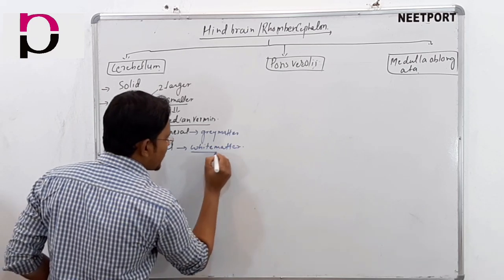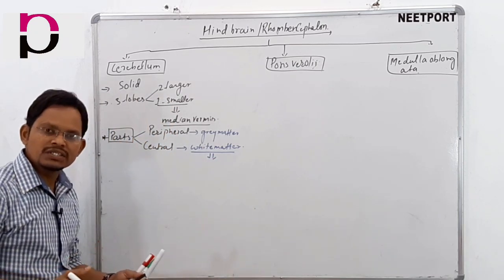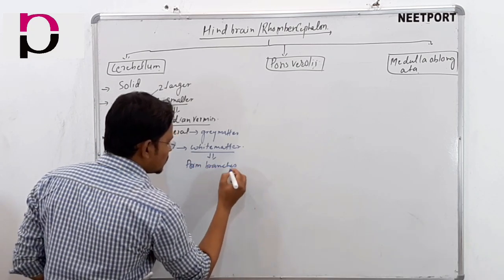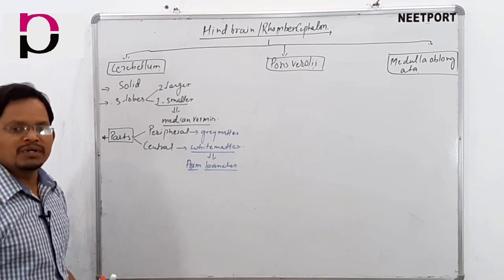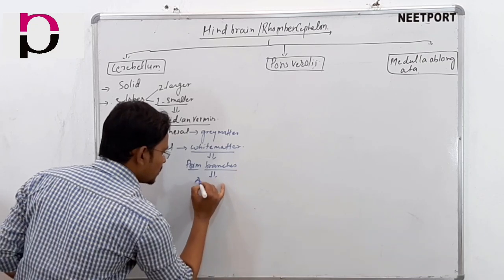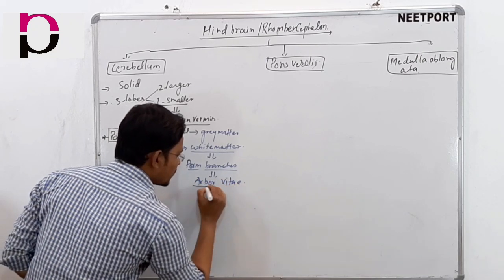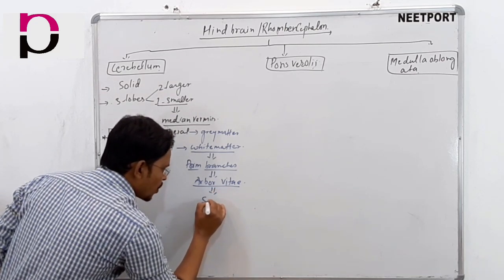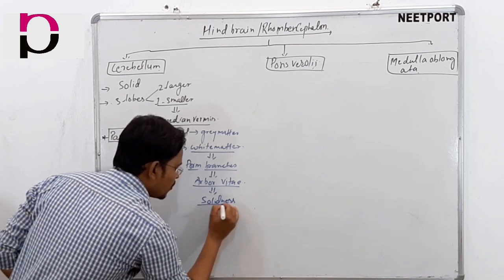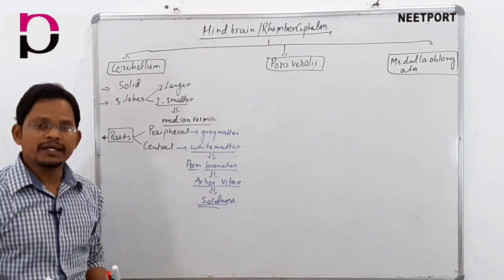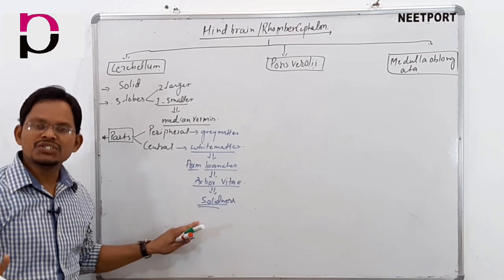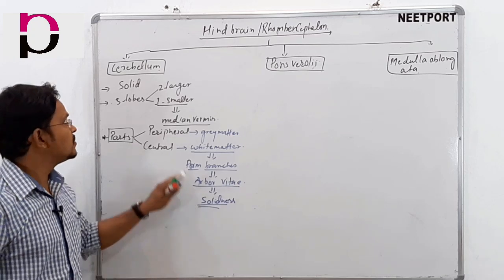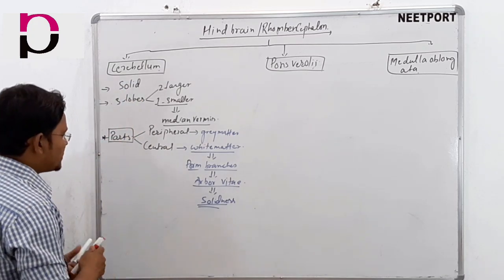This white matter further forms branches like a tree, which we call arbor vitae. The arbor vitae is what provides solidness to the cerebellum. So the solidness of the cerebellum is provided by the arbor vitae, which is found like tree branches in the central region.